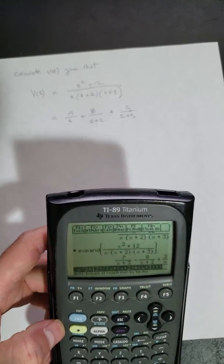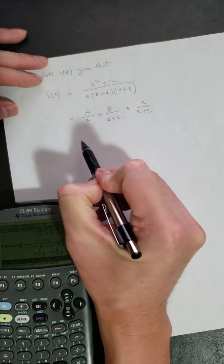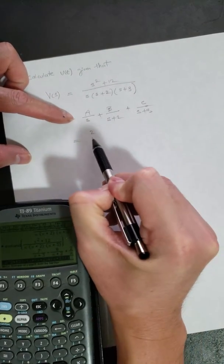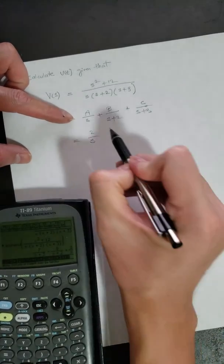There is your A, B, and C, so let's copy that down. So that is 2 over s, the B is minus 8 over s plus 2.